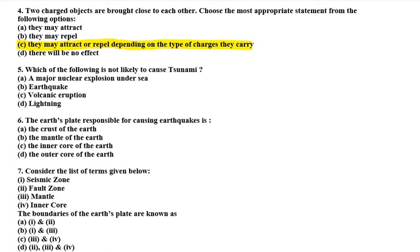Question number 5 is: which of the following is not likely to cause tsunami? So it is lightning. Because of the lightning, there will never be tsunami. What can it be? A major nuclear explosion under sea, earthquake, or volcanic eruption.